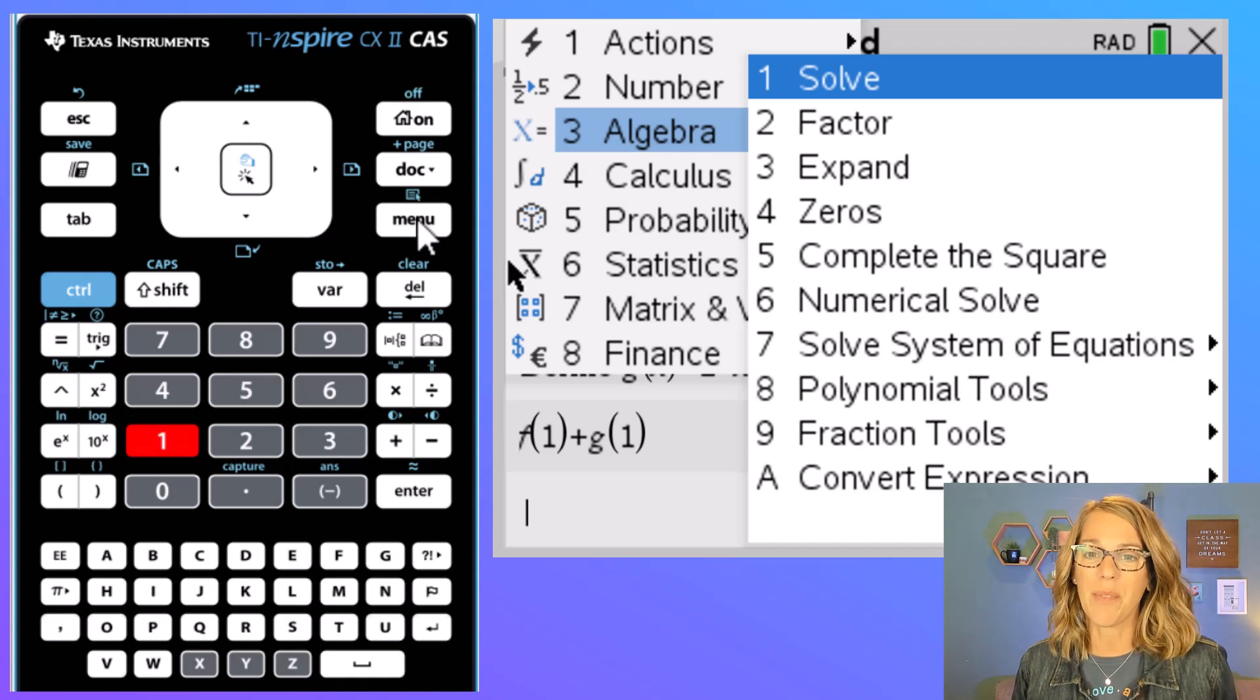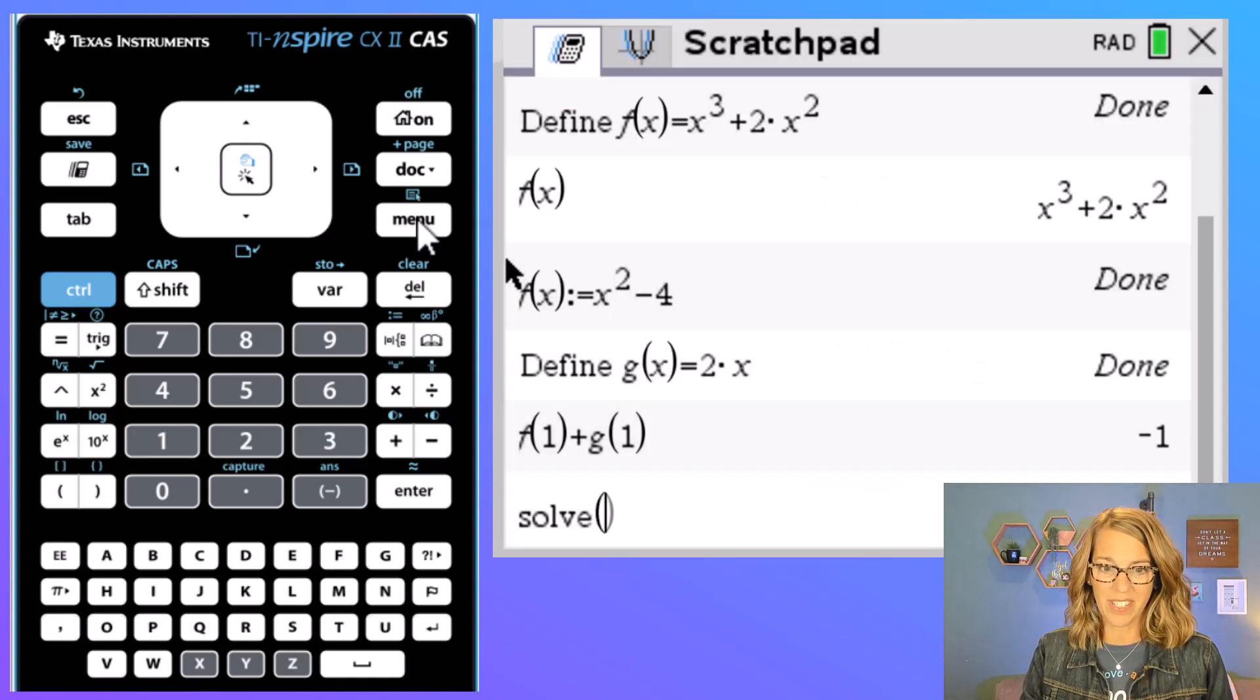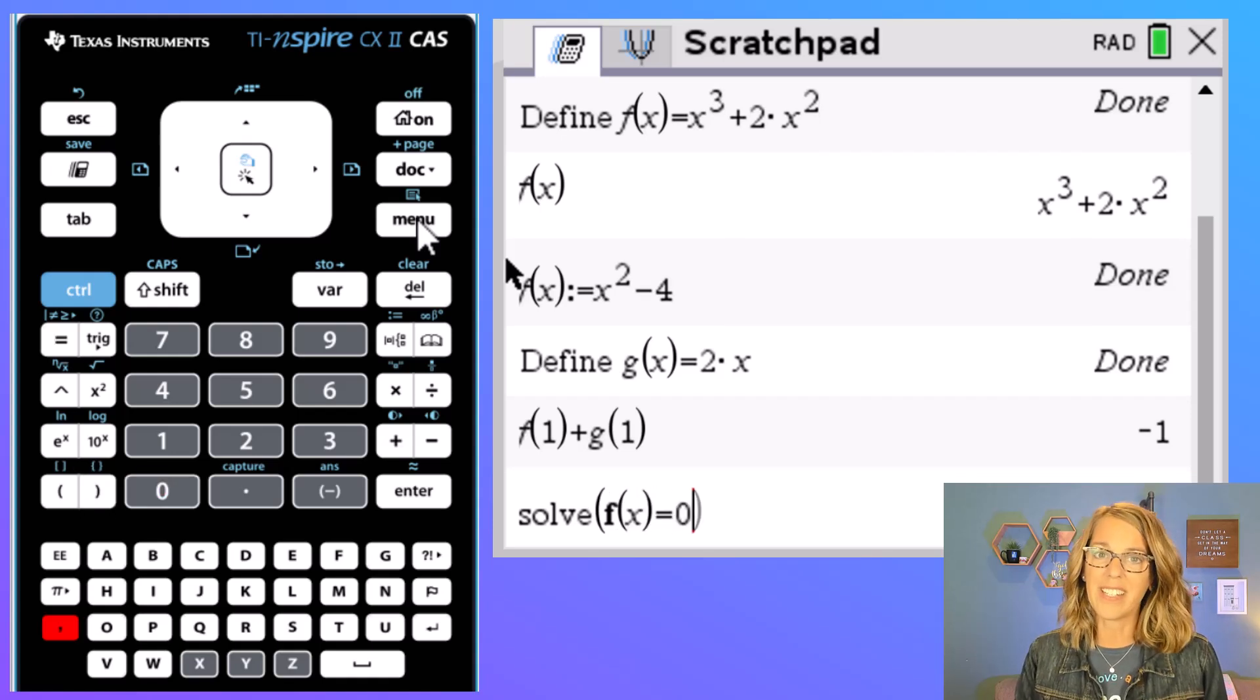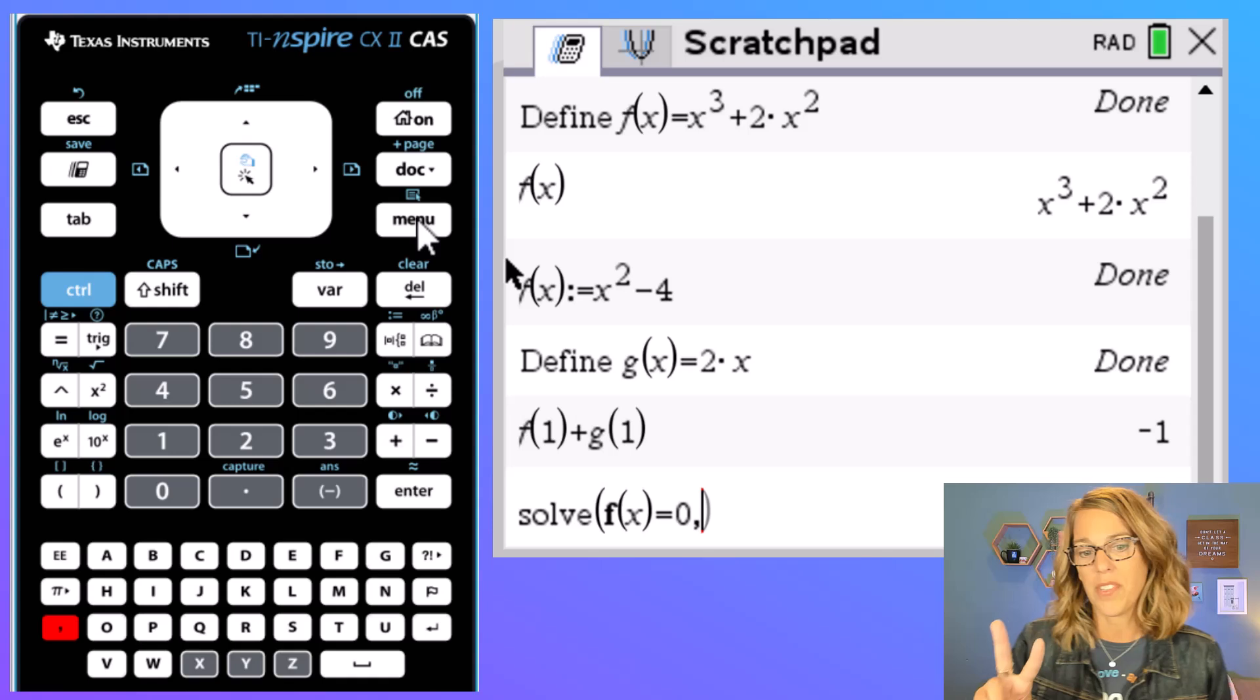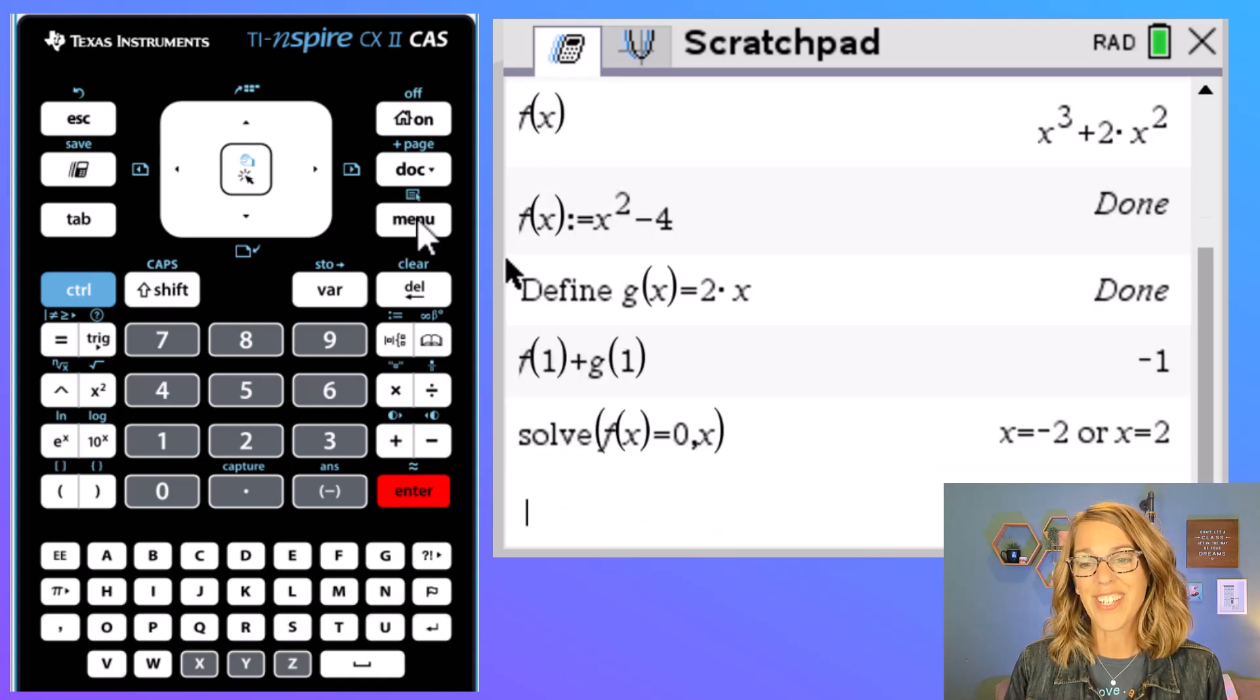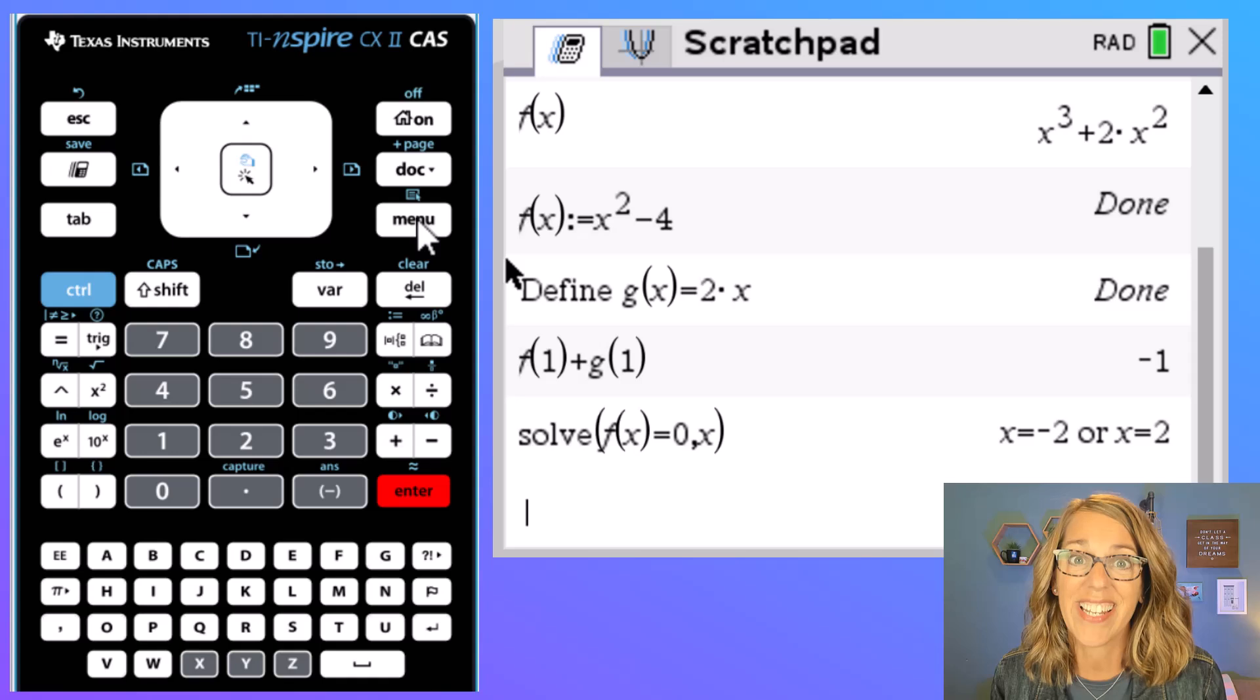So I'm going to choose number 1 here and it says what do you want to solve? I want to solve f of x equals 0 and I need to tell it what variable I'm solving for. These have two parameters, the equation and the variable. So I'm going to solve this for x and I end up with those two possible answers negative 2 or x equals 2. This is even available in test mode, which is amazing.